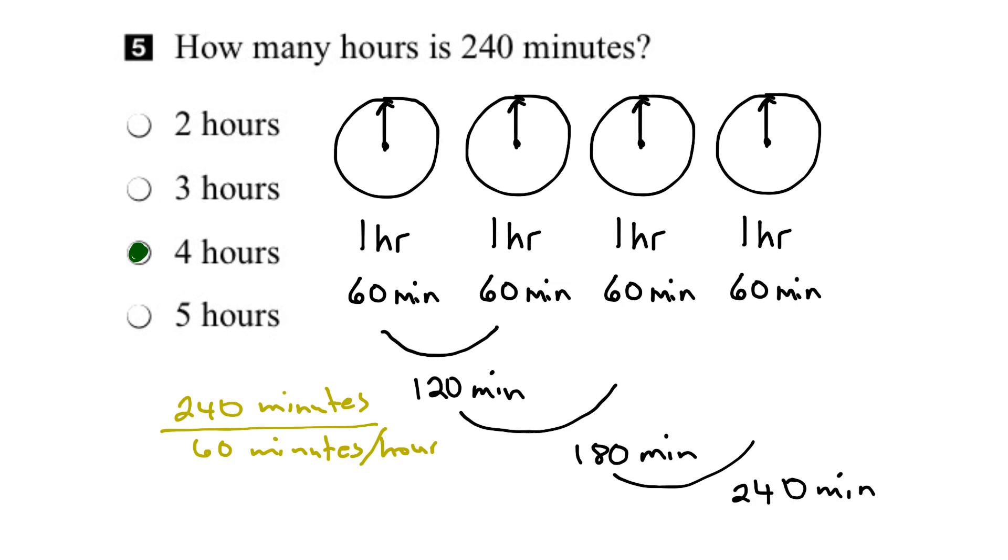And when I work that out, those 0's cancel. And 24 divided by 6 is 4. The minutes cancel out, and I'm left with the hours. So I can see that I've got 4 hours equivalent to 240 minutes. So we know we've got the right answer.